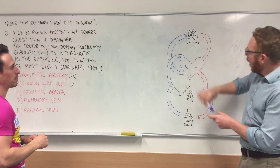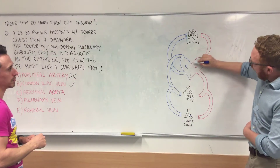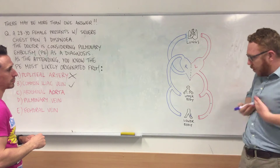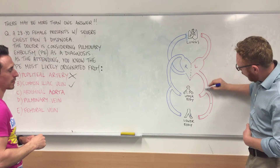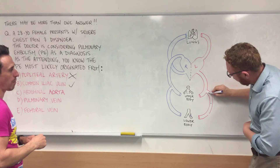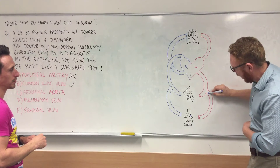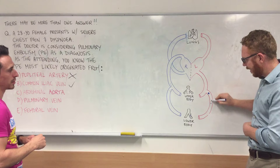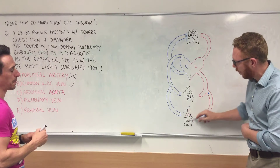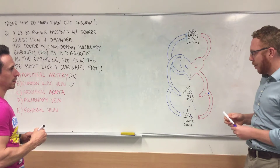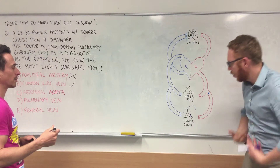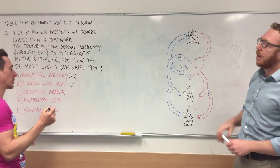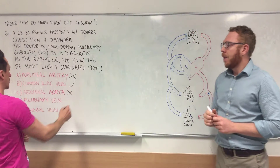The abdominal aorta is the big vessel that comes out of the left side of your heart going down to your lower body. If a clot started here, it would go downward and get lodged somewhere in your lower body, causing ischemic damage there. There's no way it can get back up into your lungs. So that's not an answer.